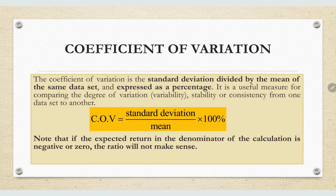Coefficient of Variation. The coefficient of variation is the standard deviation divided by the mean of the same data set, expressed as a percentage. It is a usable measure for comparing the degree of variation, variability, stability, or consistency from one data set to another.